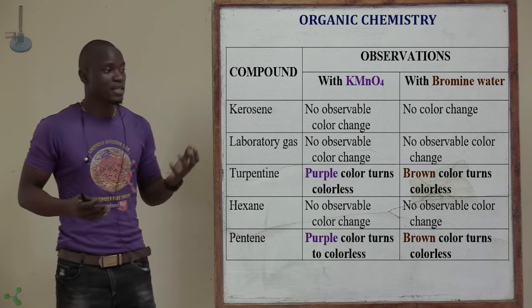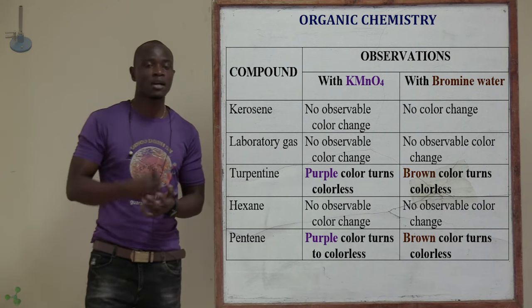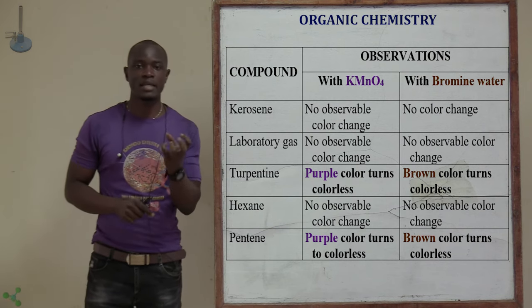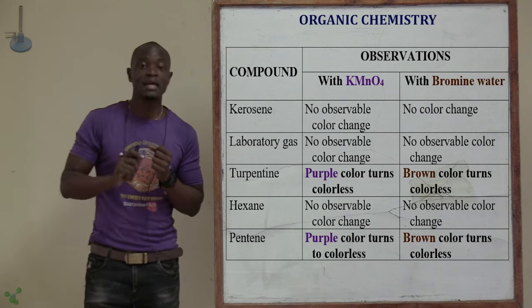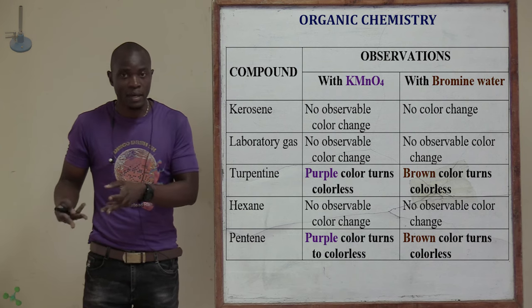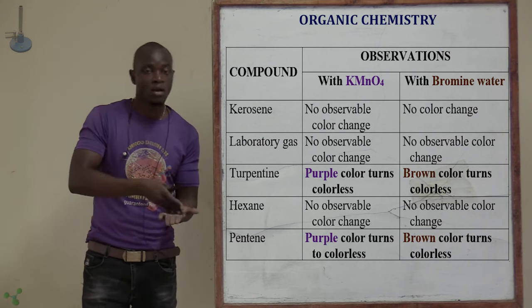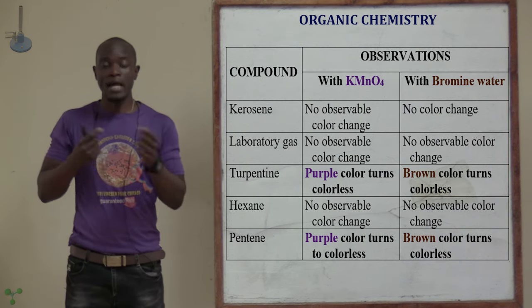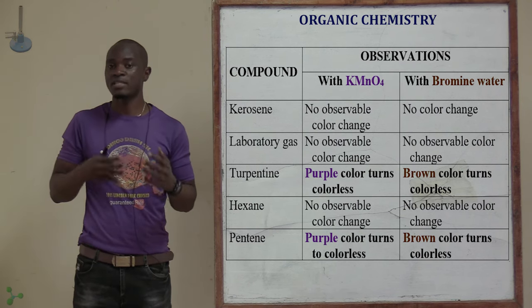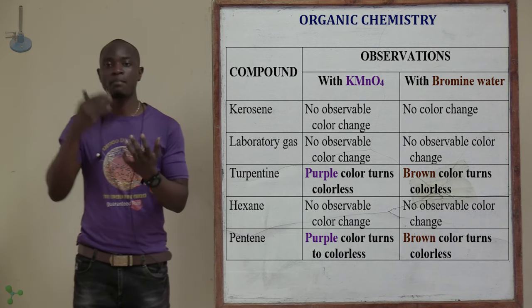We can also use turpentine — the black oily liquid used in making roads. If we add turpentine to potassium permanganate, we will see that it is going to discolorize the potassium permanganate. This is because turpentine is an unsaturated hydrocarbon. Since it has discolorized the potassium permanganate, the conclusion is that turpentine is an unsaturated hydrocarbon, meaning it can be an alkene or an alkyne. Similarly, if you add turpentine to bromine water, it is going to discolorize the bromine water, confirming that turpentine is an unsaturated hydrocarbon.